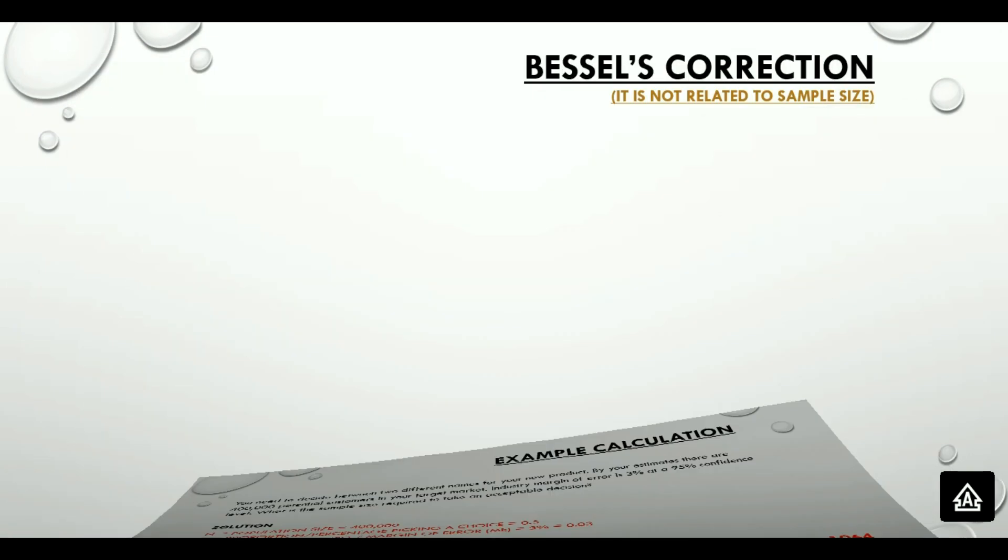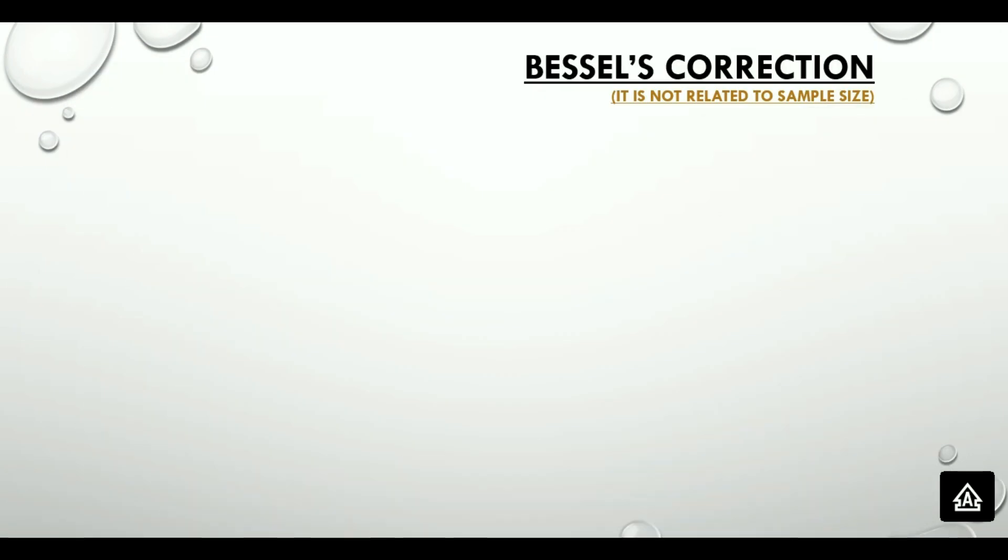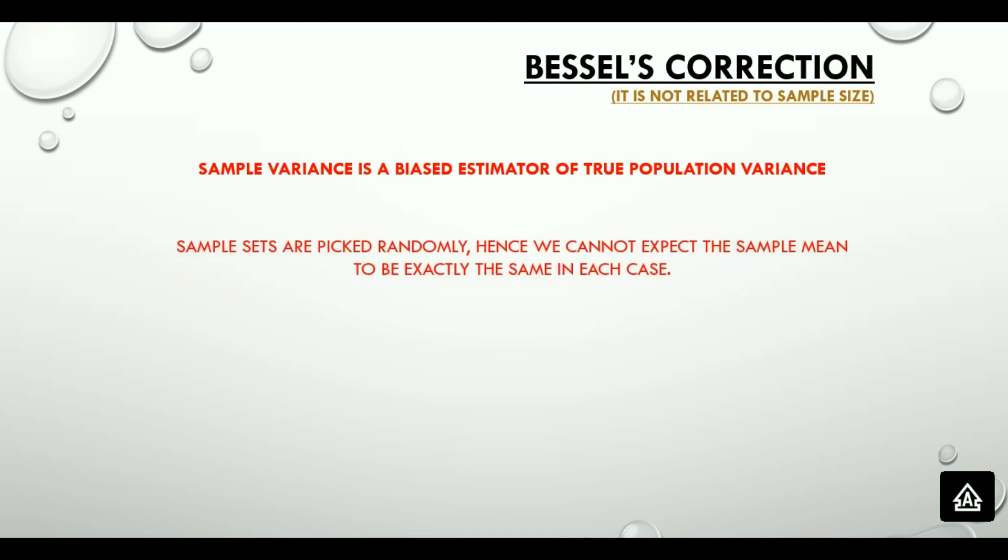Lastly, I want to touch upon a topic which one of our viewers requested for on video 1.2. It's about the modification from 1 divided by n to 1 divided by n minus 1 in the calculation of standard deviation. I said in my previous video that this is called Bessel's correction, and one of our respected viewers wanted to know what is Bessel's correction. Well, Bessel's correction is based on the premise that sample variance is a biased estimator of true population variance.